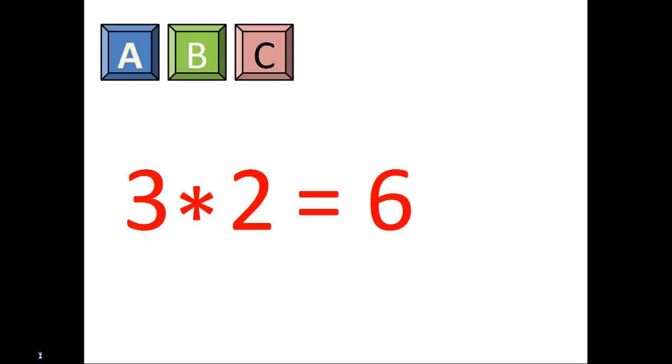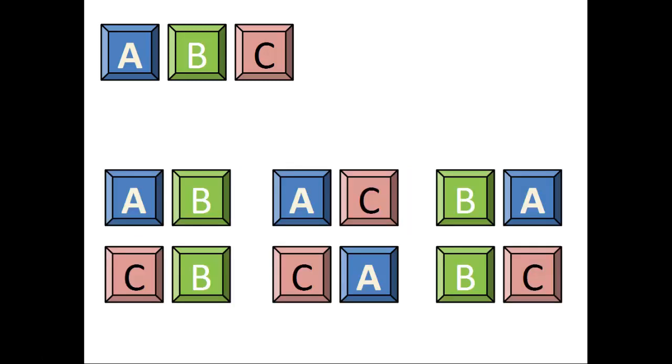So, since we have three options for the first letter and two options for the second letter, we have six options in total by the rule of product, which we can use to confirm with all the possibilities that we had listed out earlier.